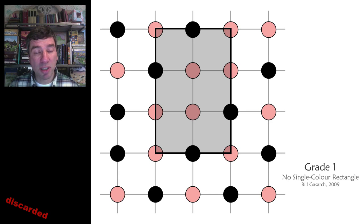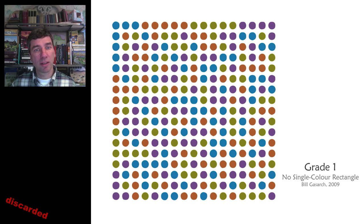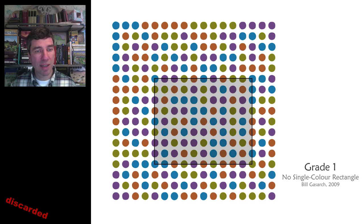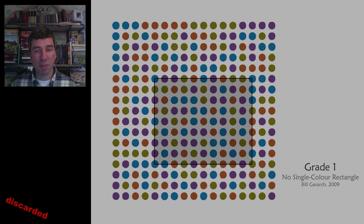This is possible to solve, so the kids can solve a 5 by 5 square. It is difficult, so you can choose a smaller square for them to solve. You can also imagine that this can get very, very difficult. This is the current record holder. This is a 17 by 17 square, and it took 4 colours in order to make sure that no rectangle in there had all 4 corners the same colour.